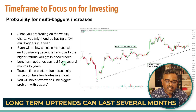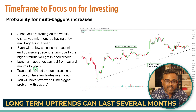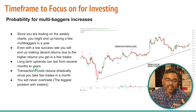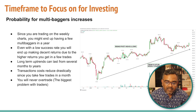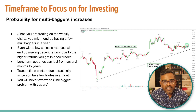Long-term uptrends can last from several months to years, which means you'll be holding some stocks for five years and some for ten years. If you can also focus on monthly time frames, you can catch even bigger multi-baggers. For example, this uptrend in Shardha Crop started somewhere in March 2021 and the stock would still be in your portfolio with you sitting on decent gains.